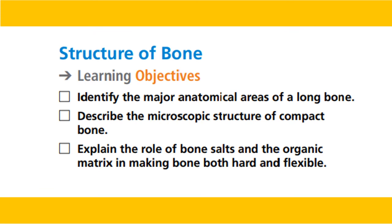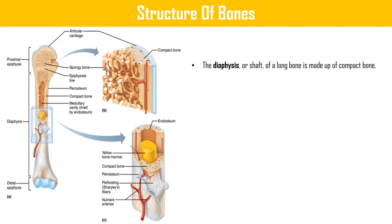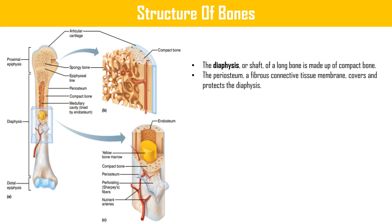Moving on to the structure of bones: here we identify the anatomical areas of a long bone, describe the microscopic structure of compact bone, and the role of bone salts and organic matrix. The diaphysis or shaft of a long bone is made up of compact bone.